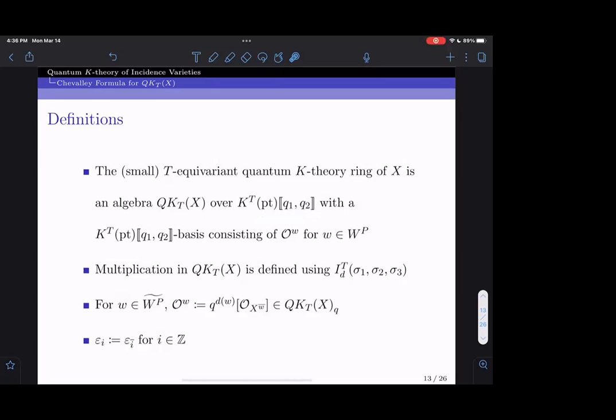These K-theoretic Gromov-Witten invariants can be packaged into the structure of a ring called the quantum K-theory ring. If you know quantum cohomology, this is the K-theoretic generalization. The quantum K-theory ring of X is an algebra over this formal power series ring where we use powers of the formal variables q1 and q2 to keep track of the components of the degree. Knowing all the K-theoretic Gromov-Witten invariants is equivalent to knowing how to multiply in the quantum K-theory ring.